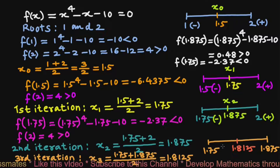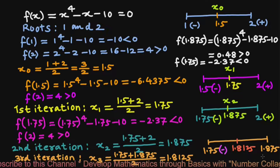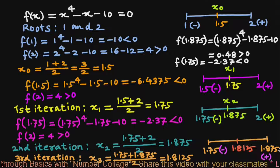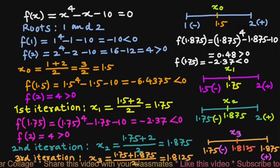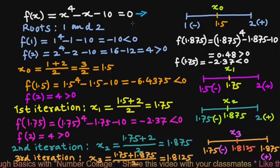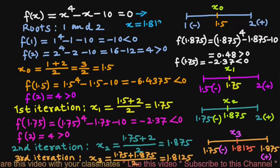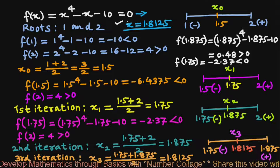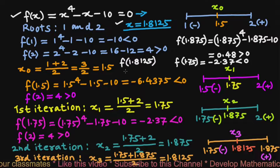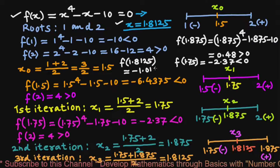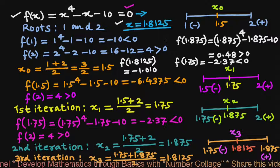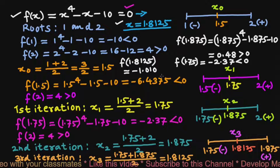After the third iteration, the approximate root of x⁴ - x - 10 = 0 is x₃ = 1.8125. Checking this, f(1.8125) ≈ -1.010, which is not very close to zero. So the solution found by the bisection method after only three iterations is not highly accurate and requires more iterations to approach the true root.